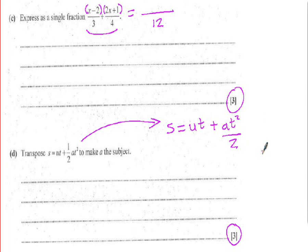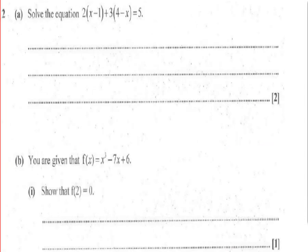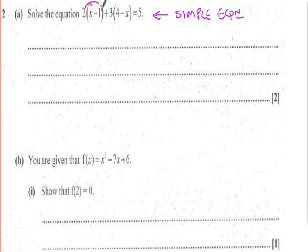Question two is on the next page: solving a simple equation — I know it's simple because it only has one unknown. You'll need to expand the brackets: 2 multiplied by x, 2 multiplied by −1, 3 multiplied by 4, 3 multiplied by −x. Be careful of your signs. Collect the like terms and rearrange to find the value of x — that's a simple equation with one unknown.